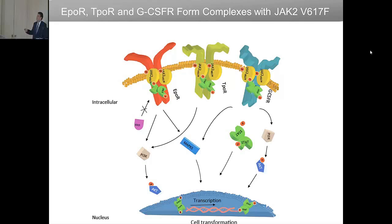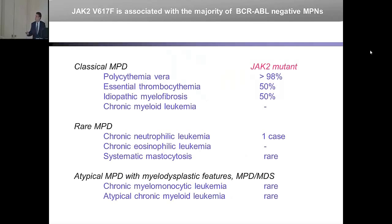What we think happens is that these receptors become constitutively active because they are bound to this mutant JAK, and there is no longer a need for ligand. That is why these patients have low EPO in their serum, which is a useful diagnostic criterion. Not only our lab, but also Tony Green, Radek Skoda, and Alexandre Bennahmias have done extensive studies. It is now clear that more than 98% of polycythemia vera patients have this acquired, unique, somatic mutation, and 50% of the other two MPN diseases are associated with this mutation.